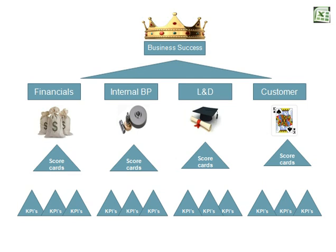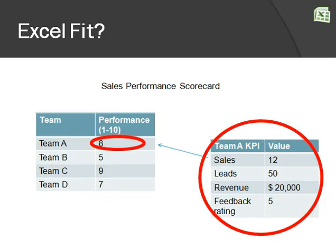Now, if you're wondering how this fits into Excel — this is how. Measurements. There are two ways to go about it. As an Excel guru, you could be told to build the tool that measures performance analysis, or you could input data into the tool that measures performance analysis. Let's take a quick look at the diagrams presented here. Let's say this is a sales performance scorecard. You've got teams A, B, C, D, and you've got performance measurements one to ten, ten being the highest. These performance values are fed by some other KPIs or some other scorecards.